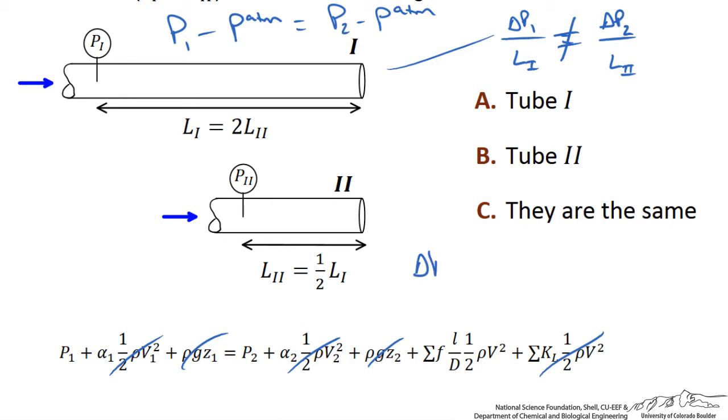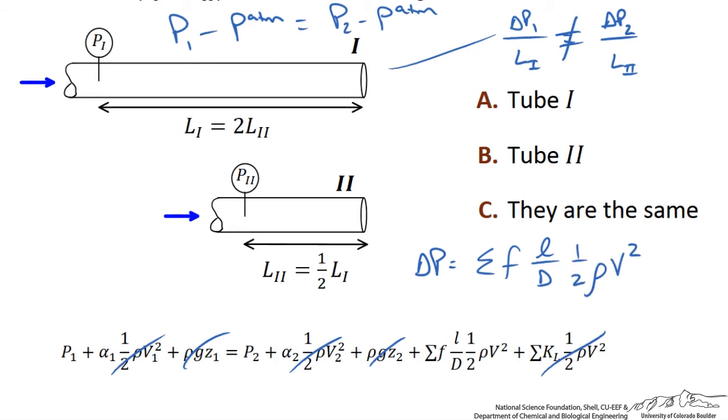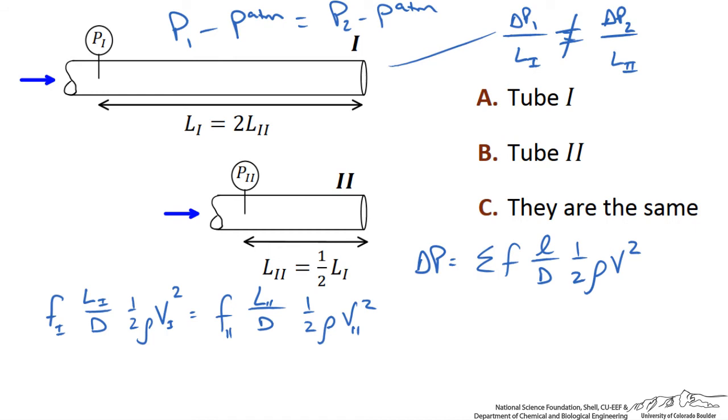then we are saying that delta P is equal to the frictional factor, the length of the pipe, the diameter of the pipe, and this kinetic term. So, if delta P1 is equal to delta P2, we can write the following relationship, where I have set the frictional losses term equal to each other for these two pipes.